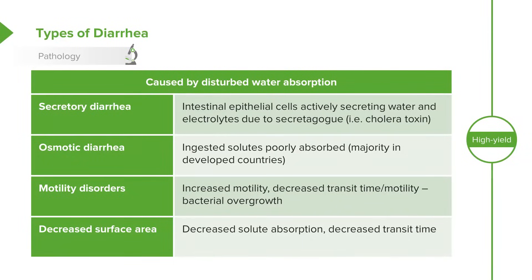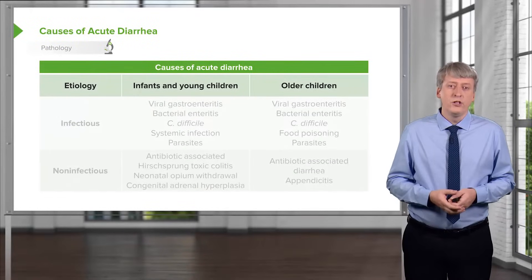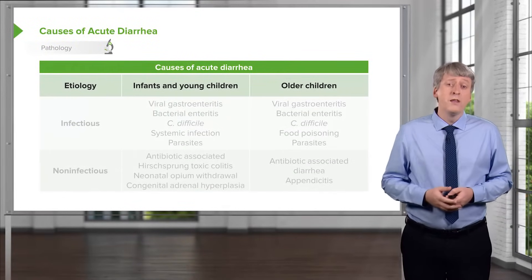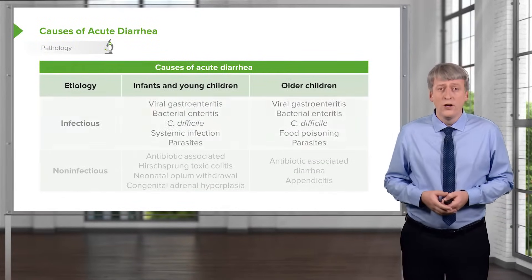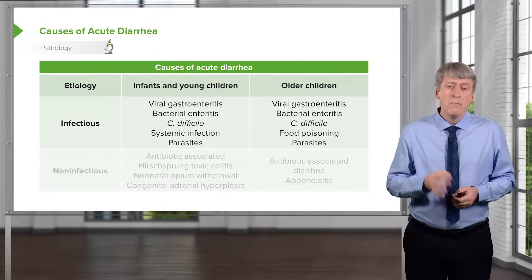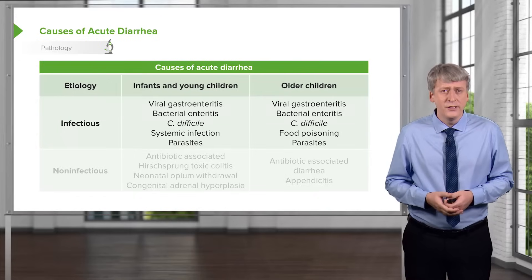Short gut syndrome is really common in some of our NICU graduates, especially those who have made it through an experience of surgical necrotizing enterocolitis. So let's drill down into the causes of acute diarrhea. By far and away, the most common cause is infectious, and among infectious causes, by far and away, the most common is viral etiologies.